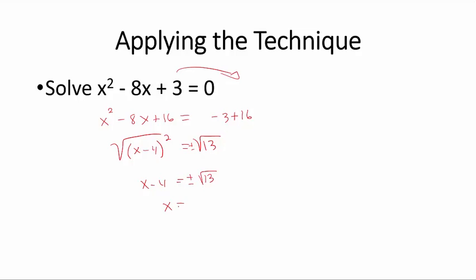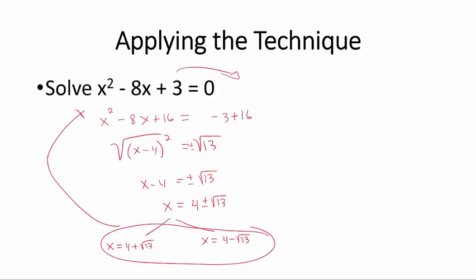That is, x is equal to 4 plus or minus the square root of 13. So we have that x is equal to 4 plus the square root of 13 or x is equal to 4 minus the square root of 13. And those are the two solutions to this equation, which we solved by applying the technique called completing the square.